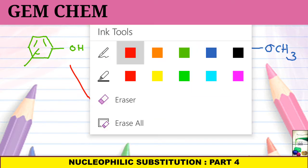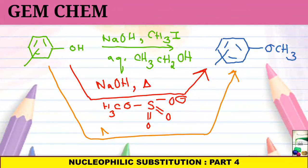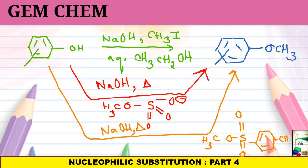And the last, if we again take sodium hydroxide and heat it along with OCH3, S double bond O, double bond O and we have here a toluene moiety, CH3. This can also be used to form this methylation.